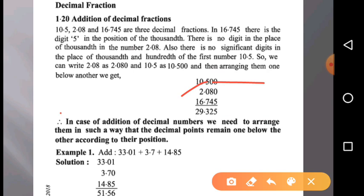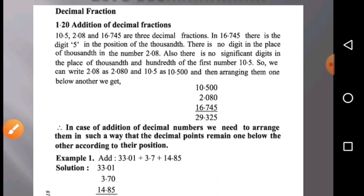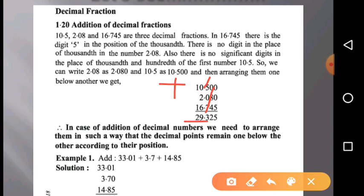Here are the rules. In case of addition of decimal fractions, we need to arrange them in such a way that the decimal points remain one below the other according to their position. You can see the decimal points are at the same position. Then if we add this, we get the summation 39.325.